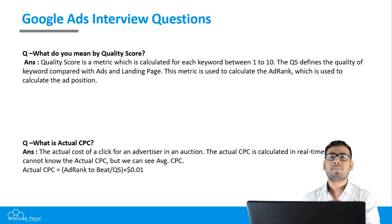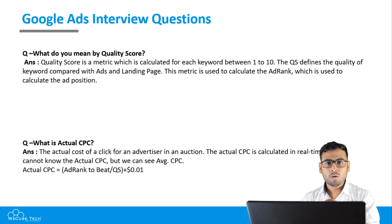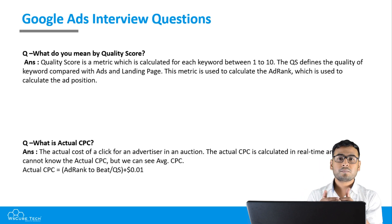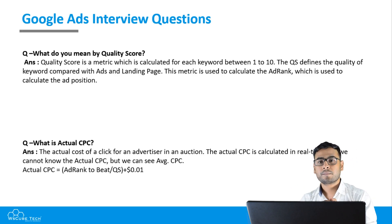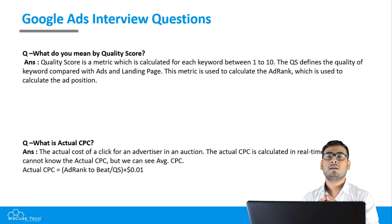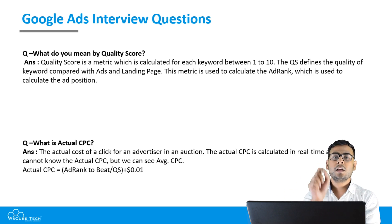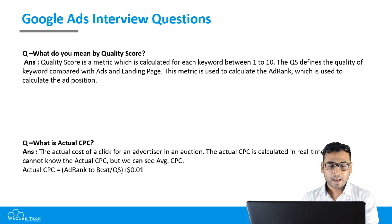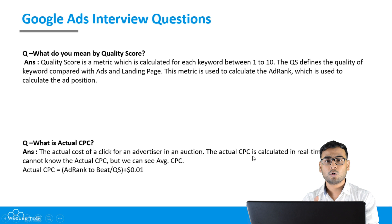The next question is: what is actual CPC — cost per click? We set a bid, say 10 rupees. Suppose our competitor is bidding 6 rupees. To beat them, we only need to pay 6 rupees and 1 paisa — our work gets done at that price, not at 10 rupees. So the 10 rupees we set is not our actual cost per click. The technical definition: the actual cost of a click for an advertiser in an auction. The actual CPC is calculated in real time when the click happens, and we cannot know the actual CPC — we can only see the average CPC.